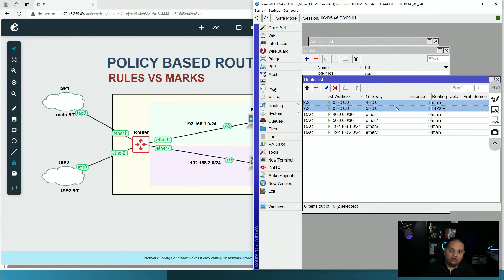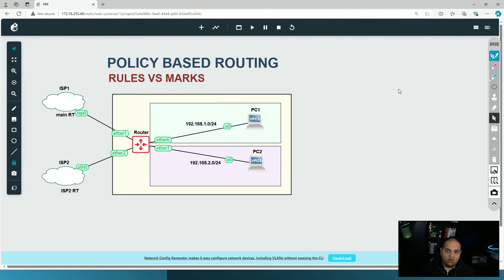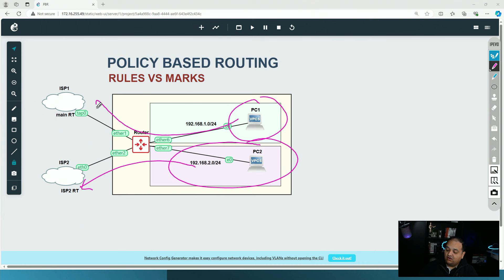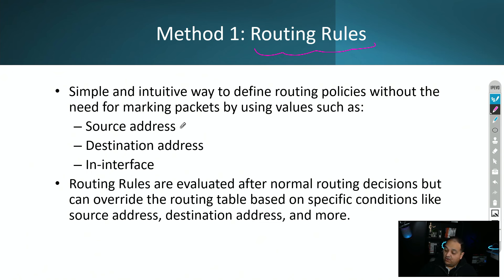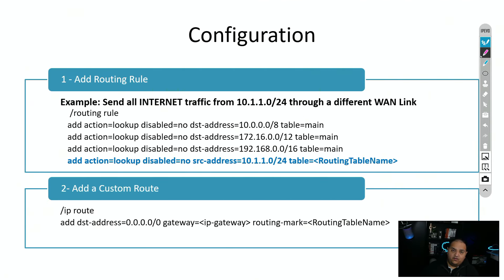How can we send traffic from 192.168.2.0/24 via ISP2 while still sending LAN1 traffic via ISP1? The first method is routing rules — a straightforward mechanism where we use basic packet information to decide which routing table resolves the traffic. We can use source address, destination address, or incoming interface as criteria. Based on that, we specify which routing table handles the matching traffic.